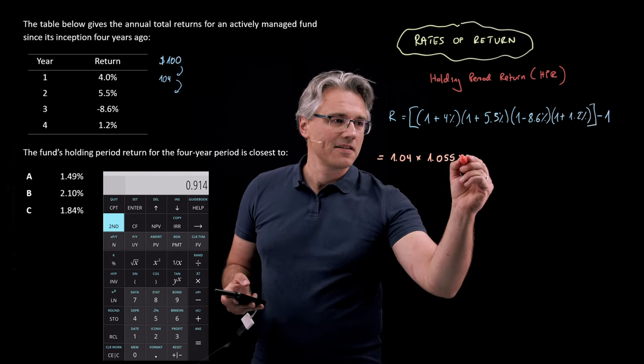So: 1.04 × 1.055 × 0.914 × 1.012, then deduct 1. I'm looking at an answer of 0.01487. Multiplied by 100, that's roughly 1.49%. That seems to be the correct answer to the problem, and it corresponds with answer A from the question.